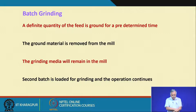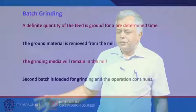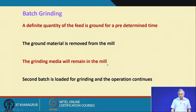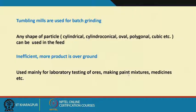In batch grinding, a definite quantity of feed is ground for a predetermined time. For example, you put 1 kilogram of material into a tumbling mill and operate it for a predetermined time of, say, 30 minutes. You then take out the material — you can put it into a sieve, remove the ground material, and return the grinding media (balls) back to the mill. Then a second batch is loaded and the operation continues.